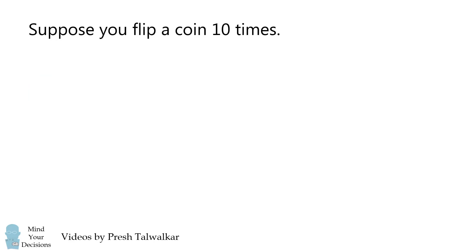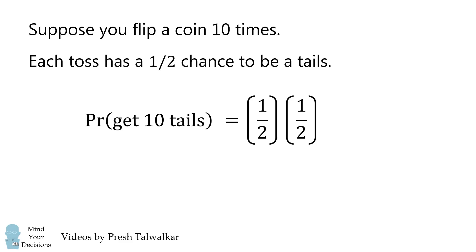Let's calculate the probability. Suppose you flip a coin 10 times. Each toss has a 1/2 chance to be tails. The probability that you get 10 tails in a row will be equal to 1/2, multiplied by 1/2, multiplied by 1/2, a total of 10 times. This simplifies to be 1/2 to the power of 10.